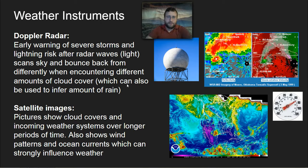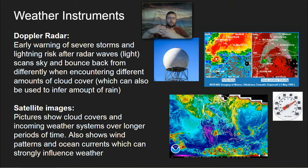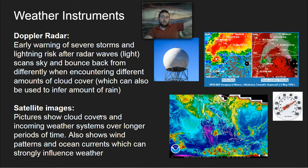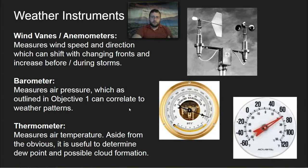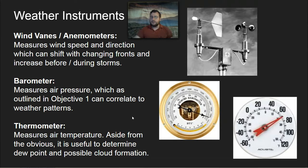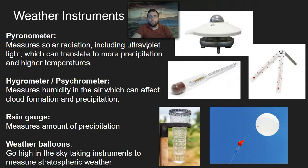Many weather instruments help us measure weather. Doppler radar helps identify incoming clouds and their density at close range — light waves reflect off clouds and the return signal measures density. Satellite images provide pictures from above, allowing us to see weather systems from very far away. Wind vanes and anemometers measure wind direction and speed. Barometers measure pressure, and thermometers measure temperature. Pressure tells you if a warm or cold front is coming, which tells you what kind of weather to expect. Temperature matters for the amount of humidity and precipitation in the air.